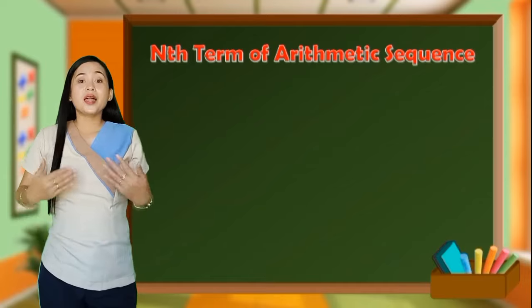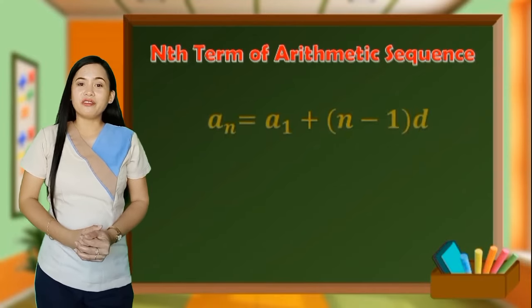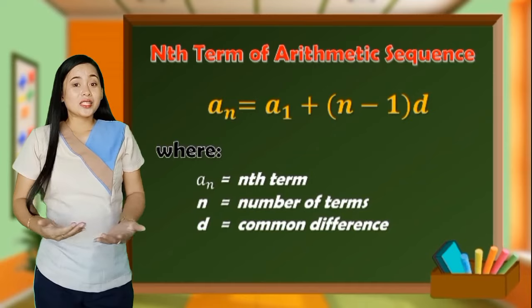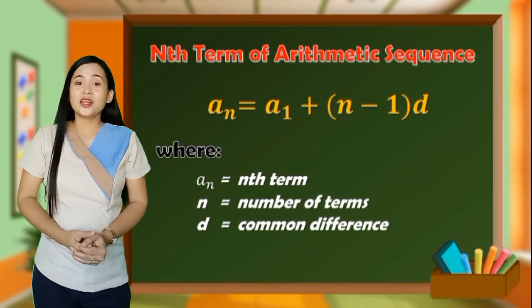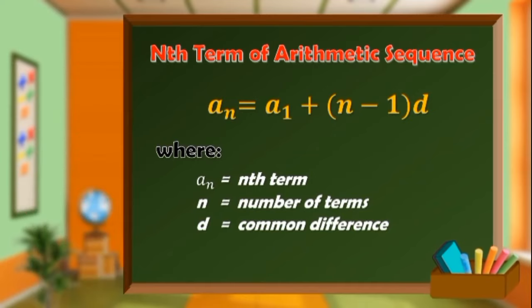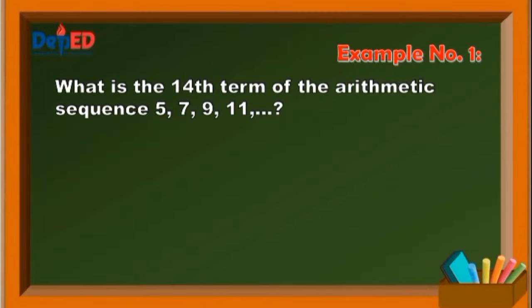And that was how we derived the formula of arithmetic sequence. So if you forget the formula, then derive it. Now, let's apply the formula in this example. What is the 14th term of the arithmetic sequence 5, 7, 9, 11, and so on?